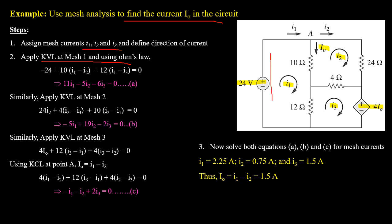Applying KVL at mesh 1: minus 24 plus 10(i1 minus i2) plus 12(i1 minus i3) equals 0. On simplification: 11i1 minus 5i2 minus 6i3 equals 24, which is the first equation. Applying KVL at mesh 2: 24i2 plus 4(i2 minus i3) plus 10(i2 minus i1) equals 0. On simplification: minus 5i1 plus 19i2 minus 2i3 equals 0, which is the second equation.